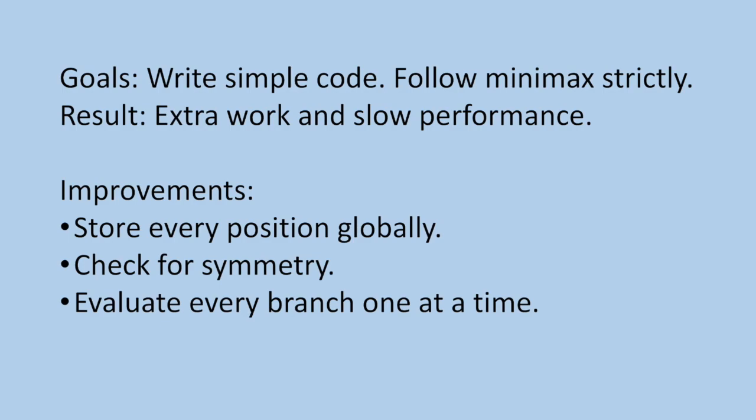The goals for the program were to write simple code and follow minimax strictly — the result is a lot of extra work and slow performance. The opening position would take about 15 seconds to solve, which is obviously very slow. If we wanted fast code, there are three easy improvements: first, store every position globally so we don't re-solve the same positions over and over. Second, check for symmetry — a position that can rotate or flip to another will have the exact same evaluation. Third, evaluate branches one at a time instead of generating all of them first; if the first branch is already a win for X, we don't need to check the rest.